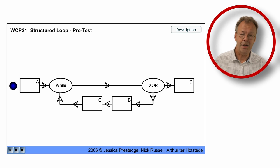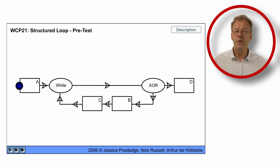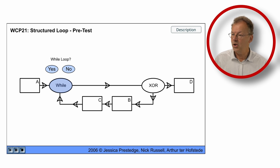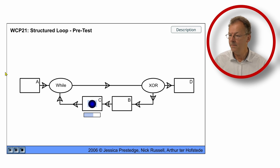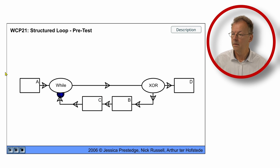The second one is for the structured loop with a pre-test. So there is a while condition and we say while loop, yes. And then at the XOR it goes down. We go to B and C. Next time we say no. And then we finish with D.